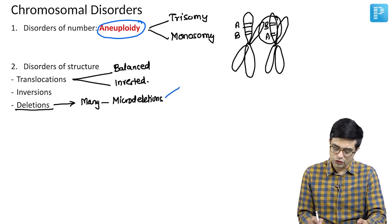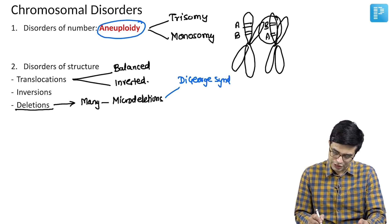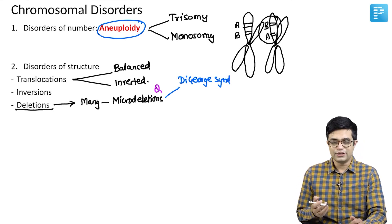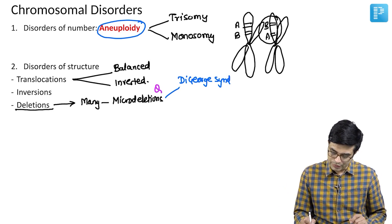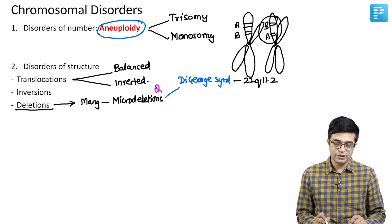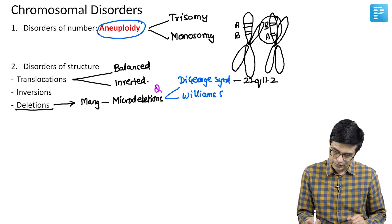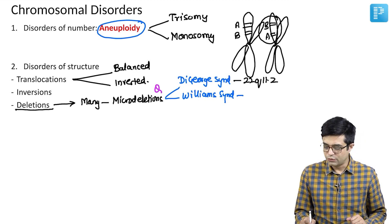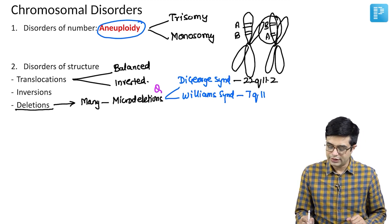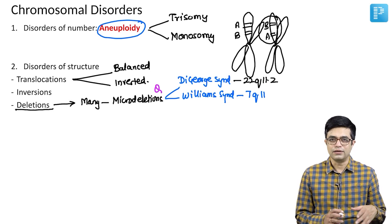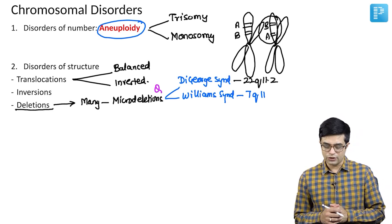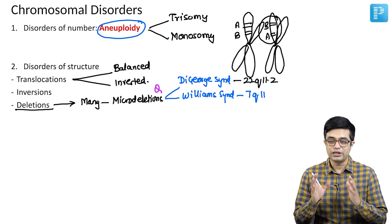A common micro-deletion syndrome is DiGeorge syndrome — which of the following is a micro-deletion syndrome is a super-speciality MCQ. DiGeorge syndrome involves micro-deletion in 22q11.2. Second is Williams syndrome, where chromosome 7q11 is involved. Other syndromes include Rubinstein-Taybi syndrome, and Prader-Willi syndrome sub-variants can also have micro-deletions. These are the micro-deletions you need to remember.